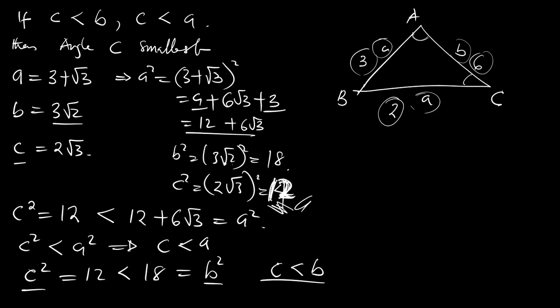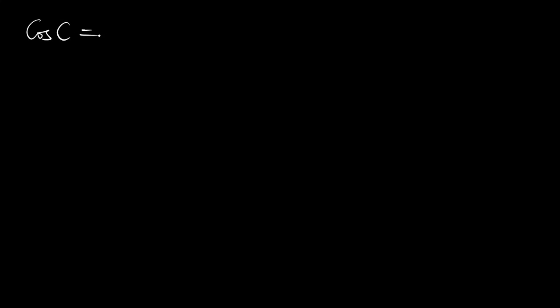So the smallest side is C, which means the smallest angle is angle C — angle ACB. To solve for angle C, we use the cosine rule: cos C equals A squared plus B squared minus C squared, all divided by 2AB.